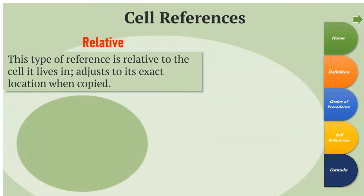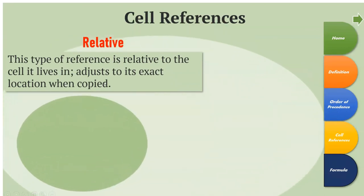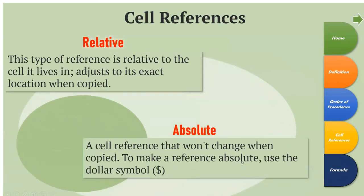Let's move on to cell references. Cell address or cell references are important because if you change the content of a cell, you can easily see the updated result. There are two types: relative reference, which adjusts to its exact location when copied, and absolute reference, which is a cell reference that won't change when copied. To make a reference absolute, you use the dollar symbol.